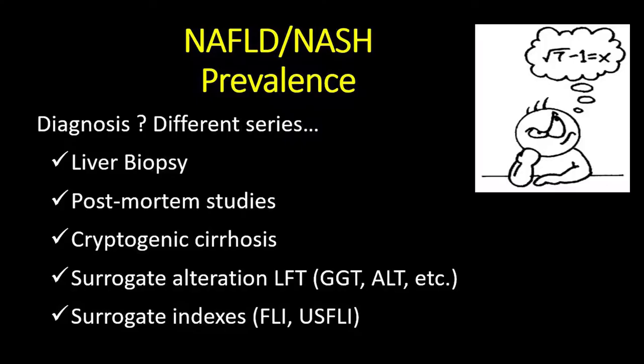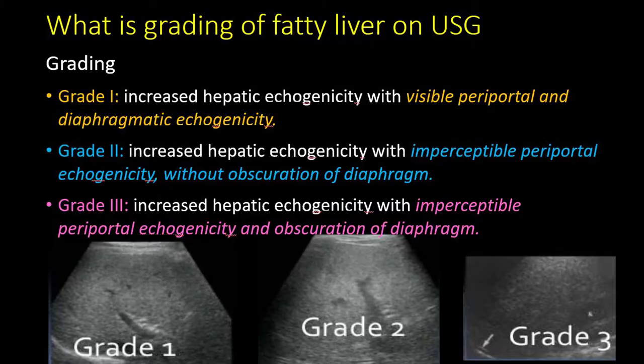How do we measure the prevalence? Through liver biopsy, postmortem studies, cryptogenic cirrhosis, surrogate markers, LFT and indices. The grading of fatty liver is also assessed by ultrasound.